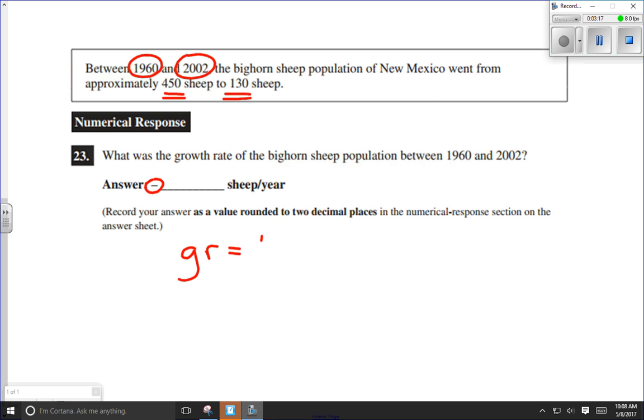Growth rate, GR, is equal to delta N over delta T. Let's solve for our delta N first.